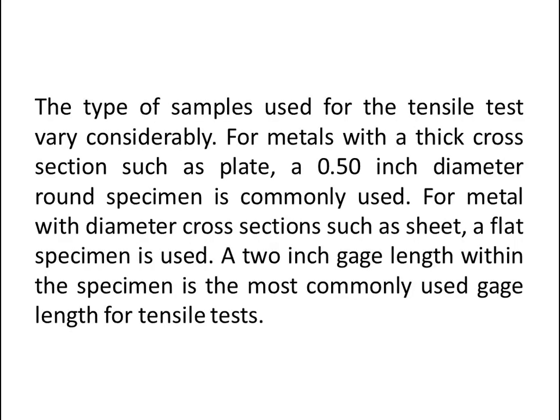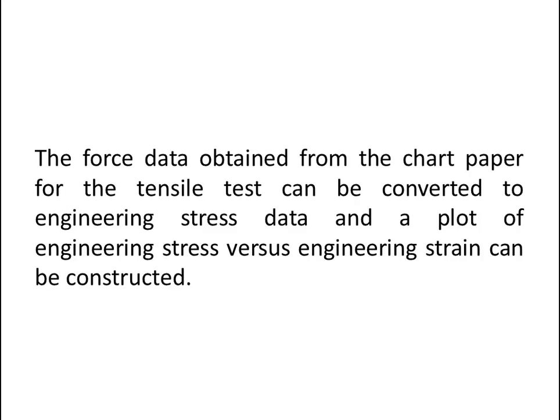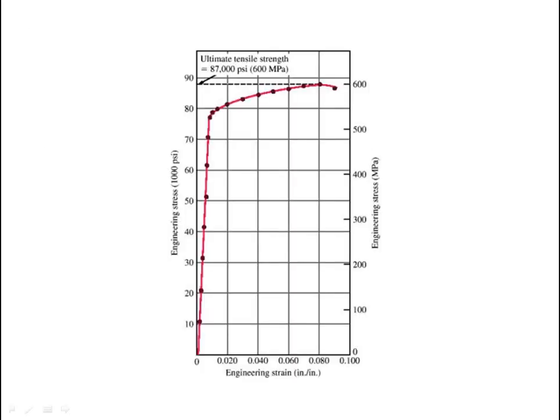The type of samples used for the tensile test vary considerably. For metals with a thick cross-section such as plate, a 0.50-inch diameter round specimen is commonly used. For metals with a thin cross-section such as sheet, a flat specimen is used. A 2-inch gauge length within the specimen is the most commonly used gauge length for the tensile test. The force data from the test can be converted to engineering stress data, and a plot of engineering stress versus engineering strain can be constructed.